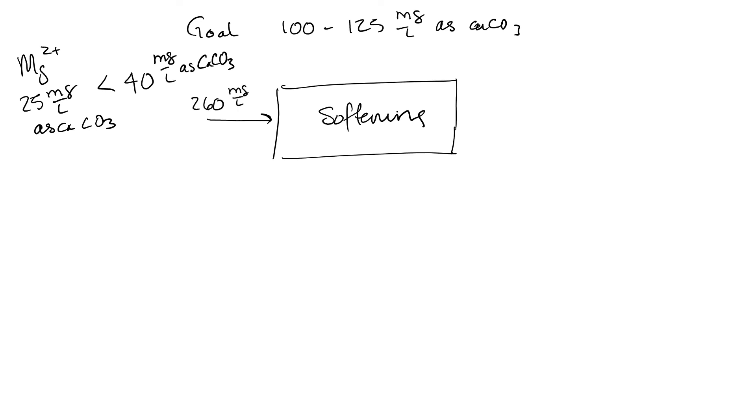So again, we're starting 260 milligrams per liter as calcium carbonate. Now, if we only remove the calcium plus neutralizing the CO2, then we have 30 milligrams per liter as calcium carbonate for our calcium. Our blend is still the same, 260 milligrams per liter as calcium carbonate. Our mass balance is still the same, around that same point.